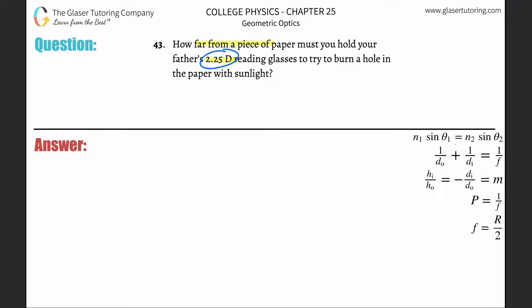All right, so if we know the power in diopters, we can always find the focal length. So why don't we do that first? Power is equal to 1 over the focal length. If you have to find the focal length, you just simply cross-multiply this.